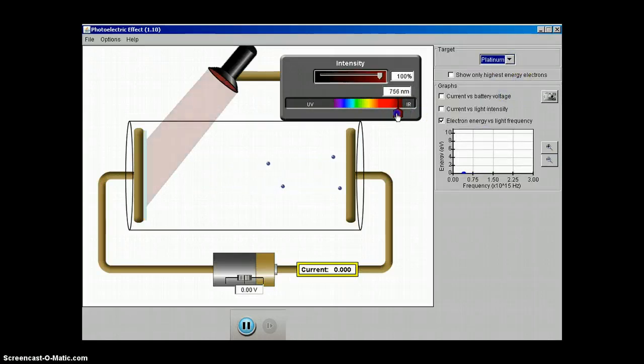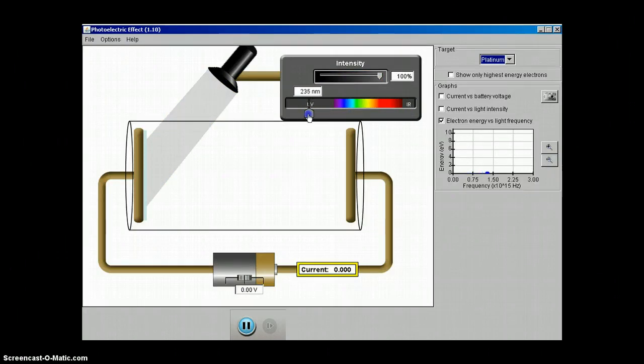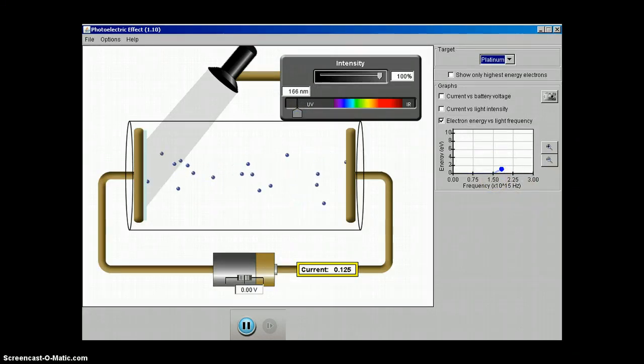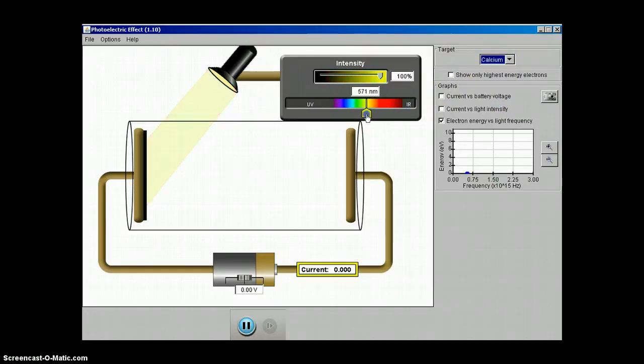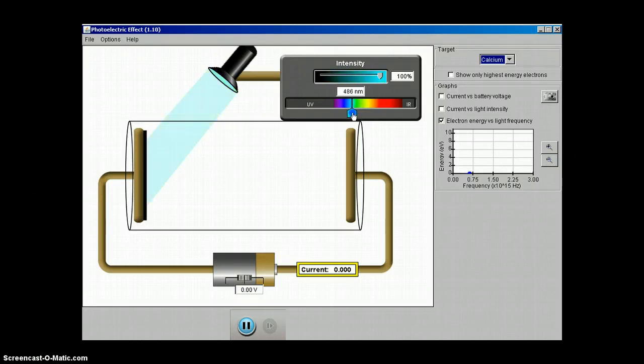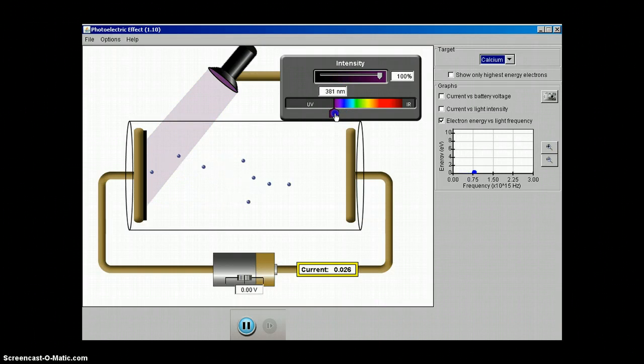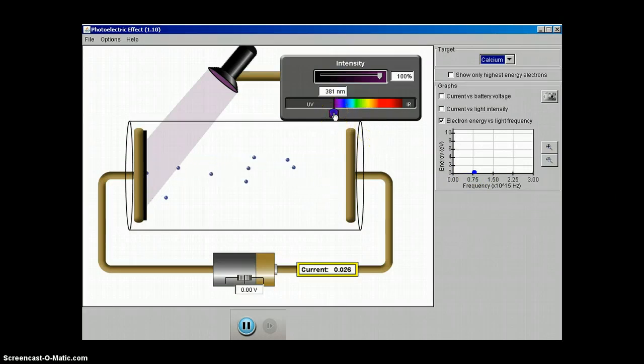Platinum, right there. So about 1.5 times 10 to the 15th hertz up in ultraviolet before photoelectrons are emitted. And calcium, at about 0.8, a little bit above 0.75 here before they're emitted from the plate.